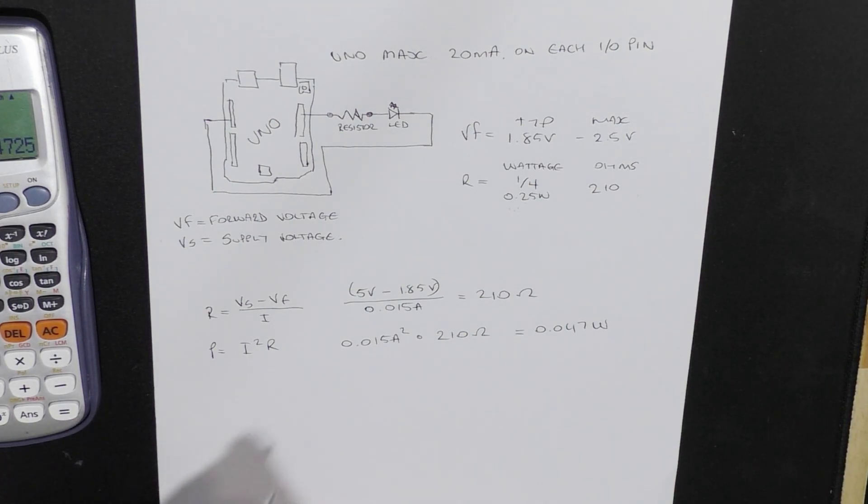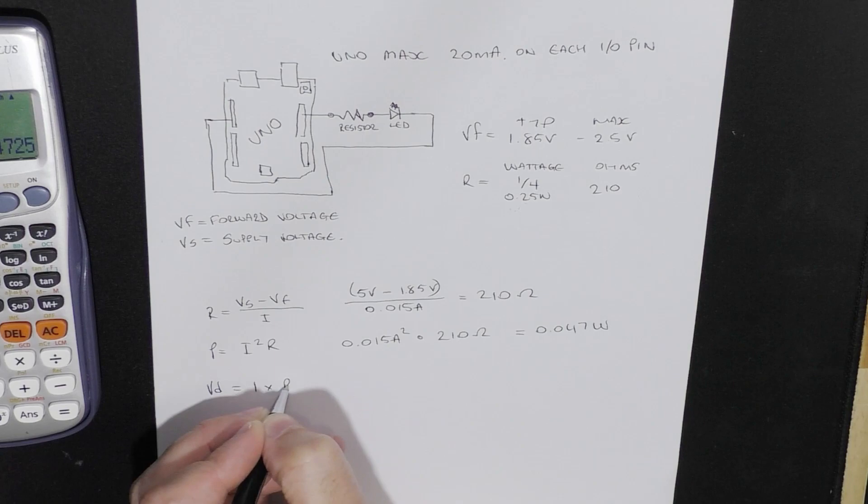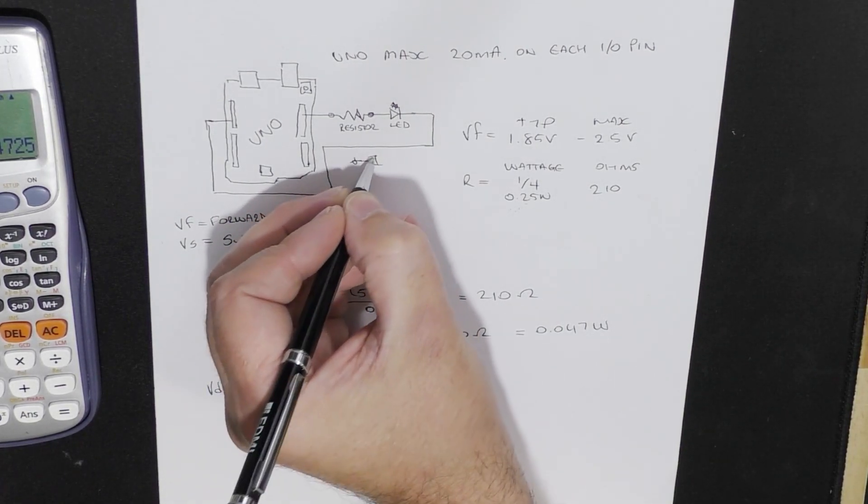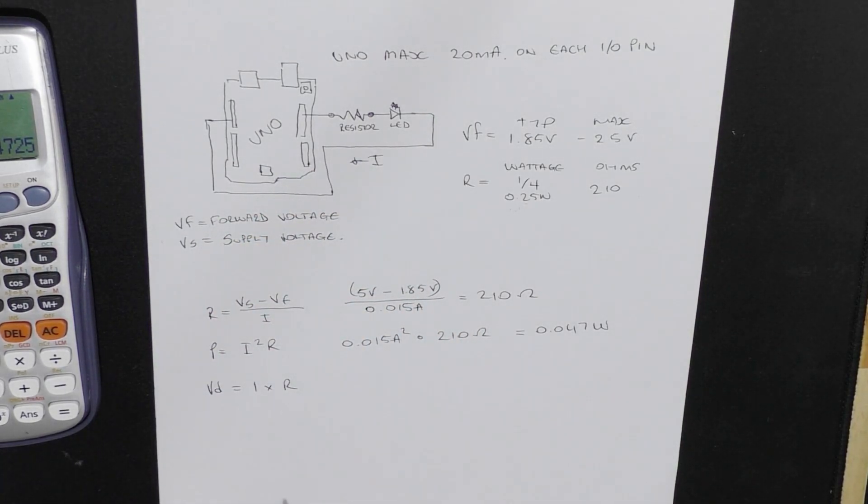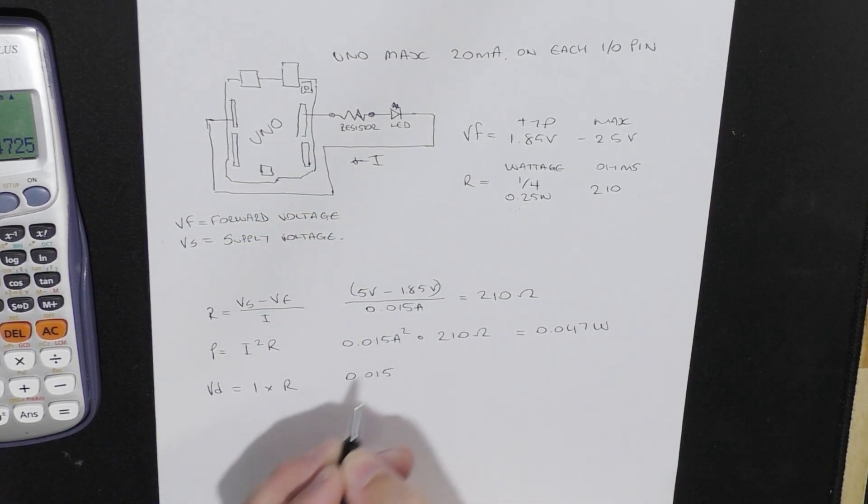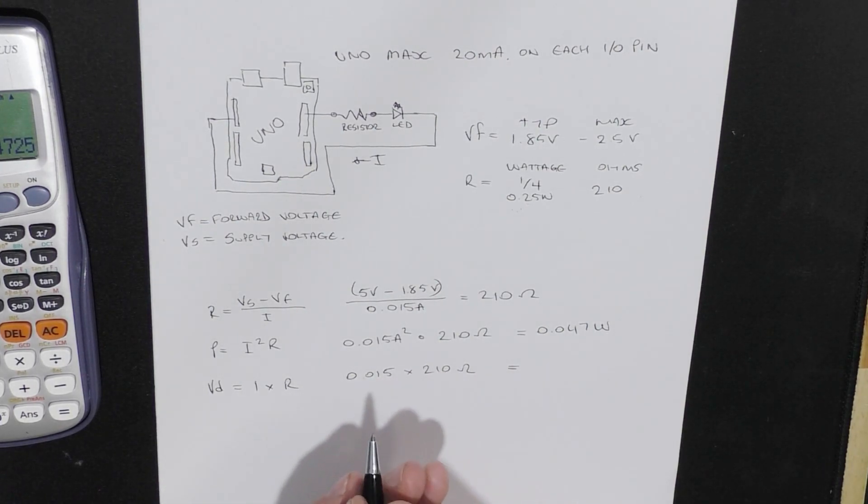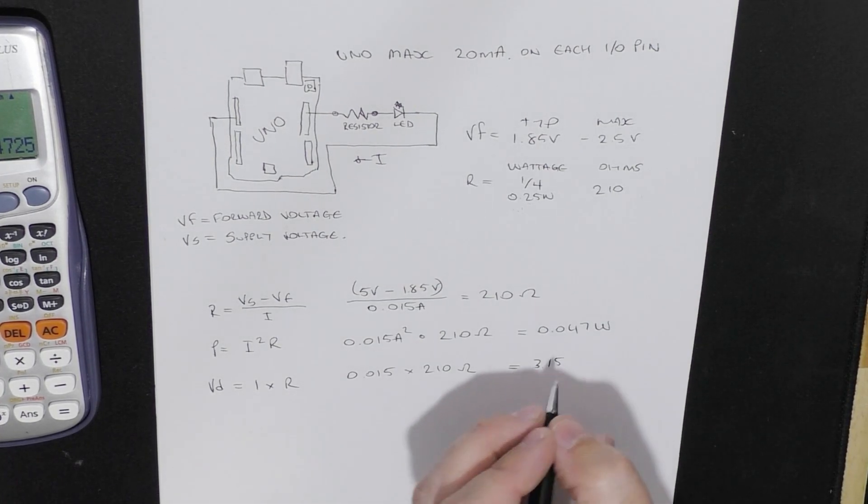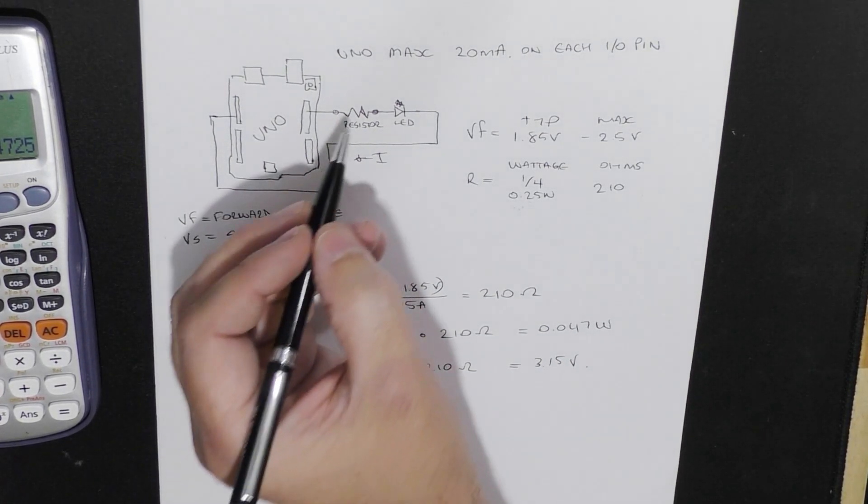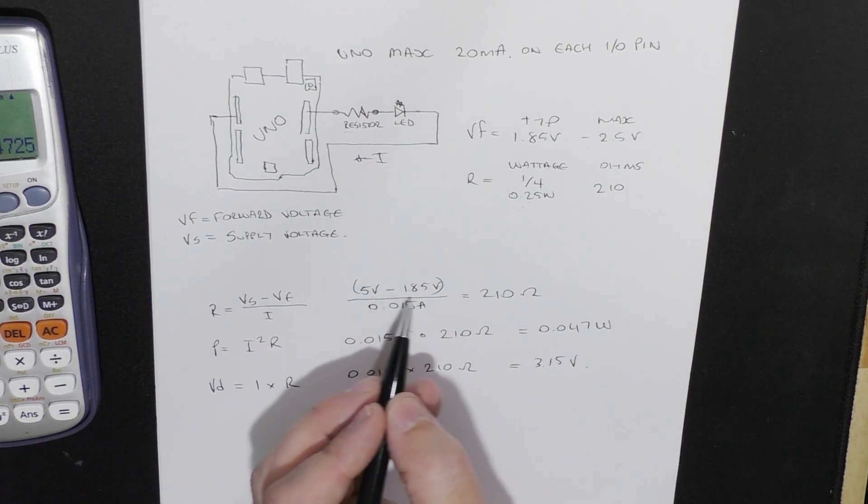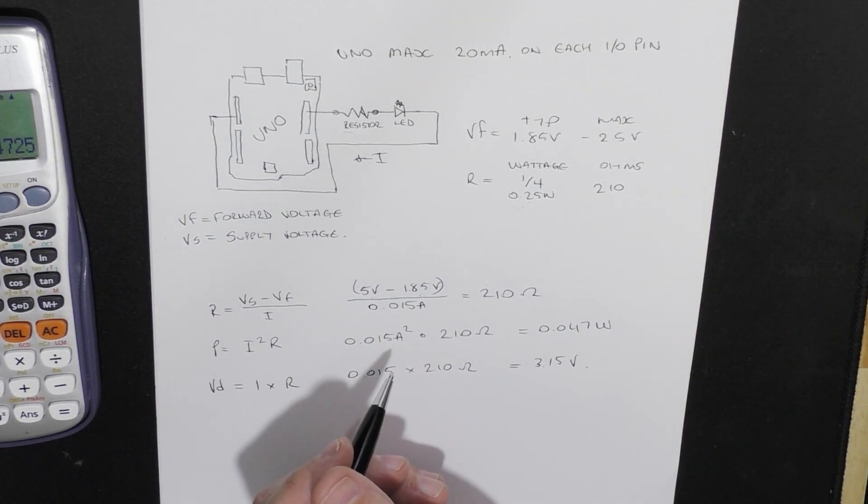If you actually wanted to work out the voltage drop across that resistor. If you needed to worry about that. You could just simply do the voltage drop equals I times R. So the current. We know what the current is. Because the current in a series circuit is equal across all components. So 0.015 multiplied by the 210 equals 3.15 volts. So the voltage drop across the resistor. 3.15 volts. But we could also actually just take that one and minus that. And it will also give us the same answer.